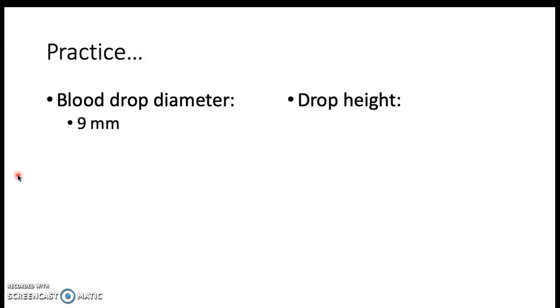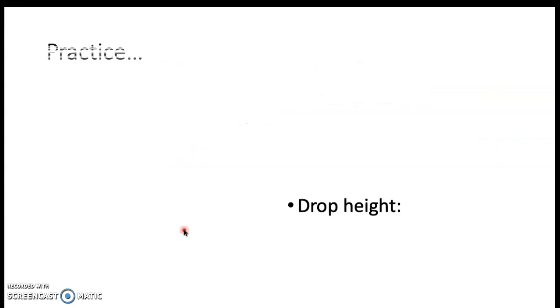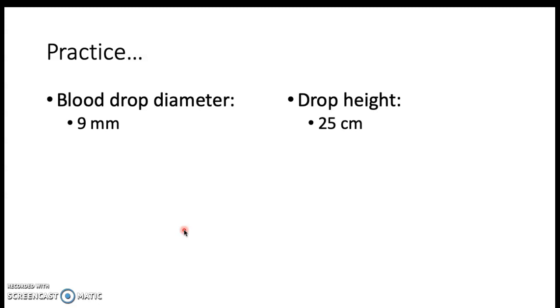So let me do the first one for you and then show you how it's done. And then you can go through the rest of them. So let's say that our first one is the blood drop diameter right across the center, not including any spines or satellite spatter, is 9 millimeters. So what we do then is go back to this graph. 9 millimeters would be halfway between 8 and 10. So we come straight across to where it intersects the line, which is right about there. Then you come straight down from there. And if we consider that 30 is going to be right about there, then this is probably going to be at about 25. So that blood drop that caused a splat that was about 9 millimeters in diameter fell from a height of about 25 centimeters.